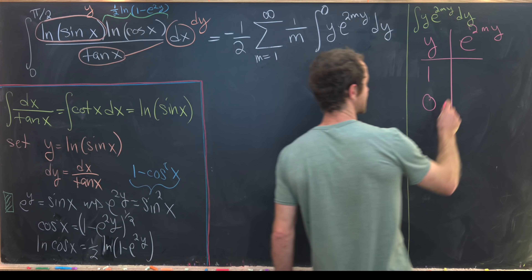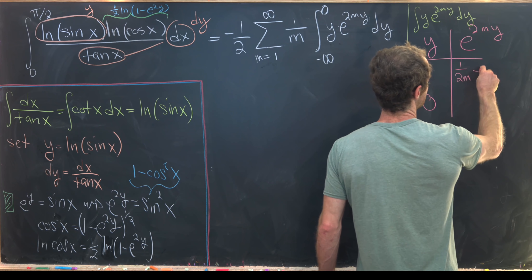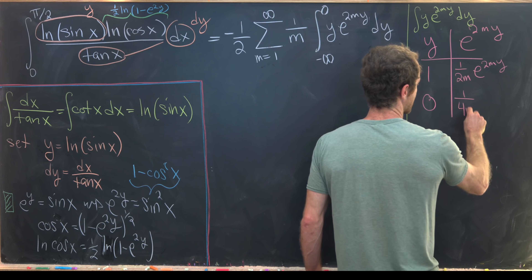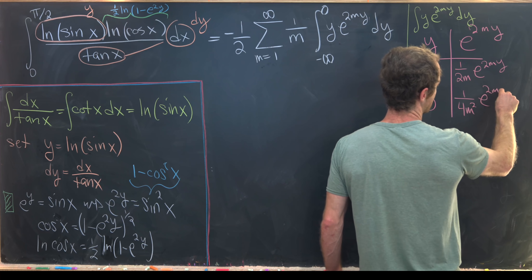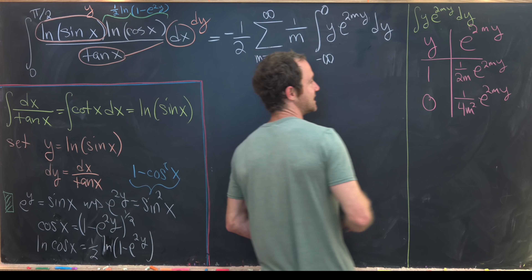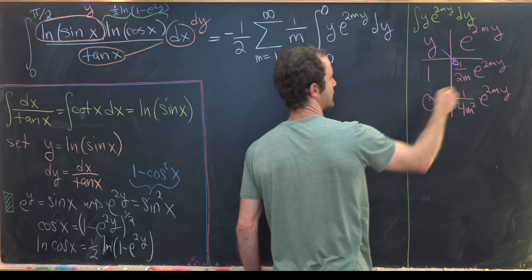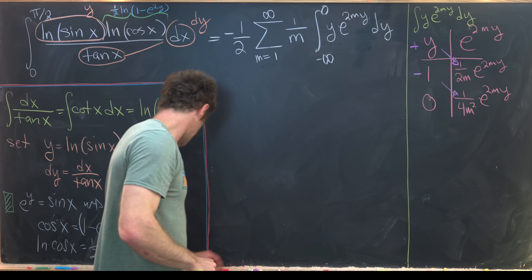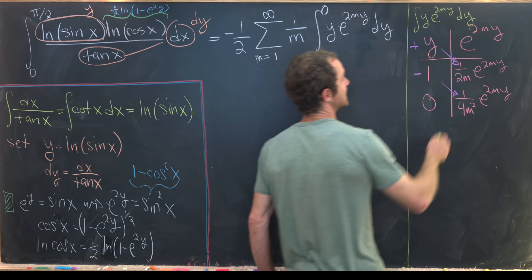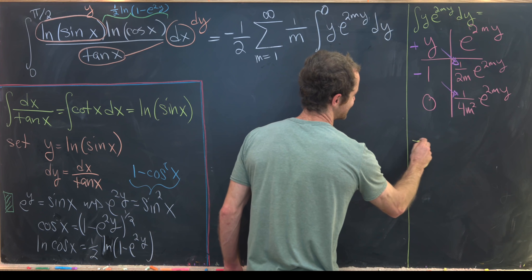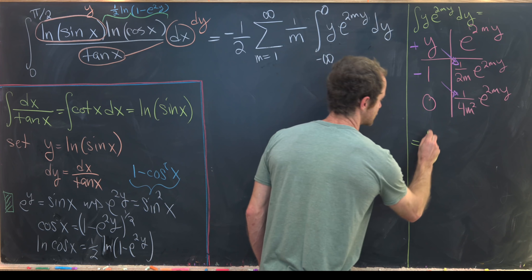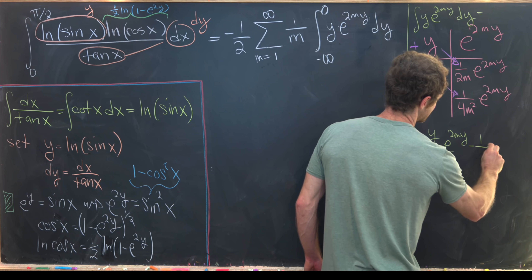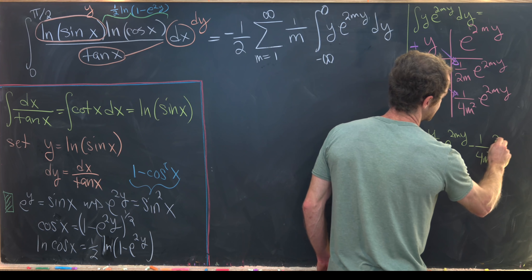Taking derivatives: y → 1 → 0. Taking antiderivatives of e^(2my): e^(2my)/(2m) → e^(2my)/(4m²). Matching on the diagonals and alternating signs, the antiderivative of y e^(2my) is y/(2m) · e^(2my) − 1/(4m²) · e^(2my).